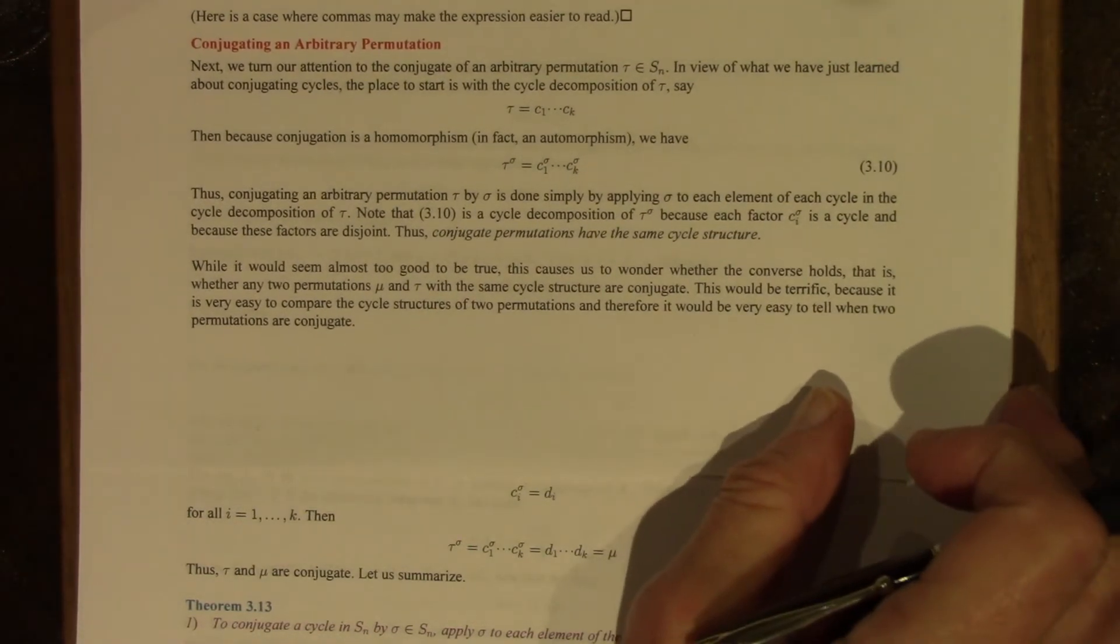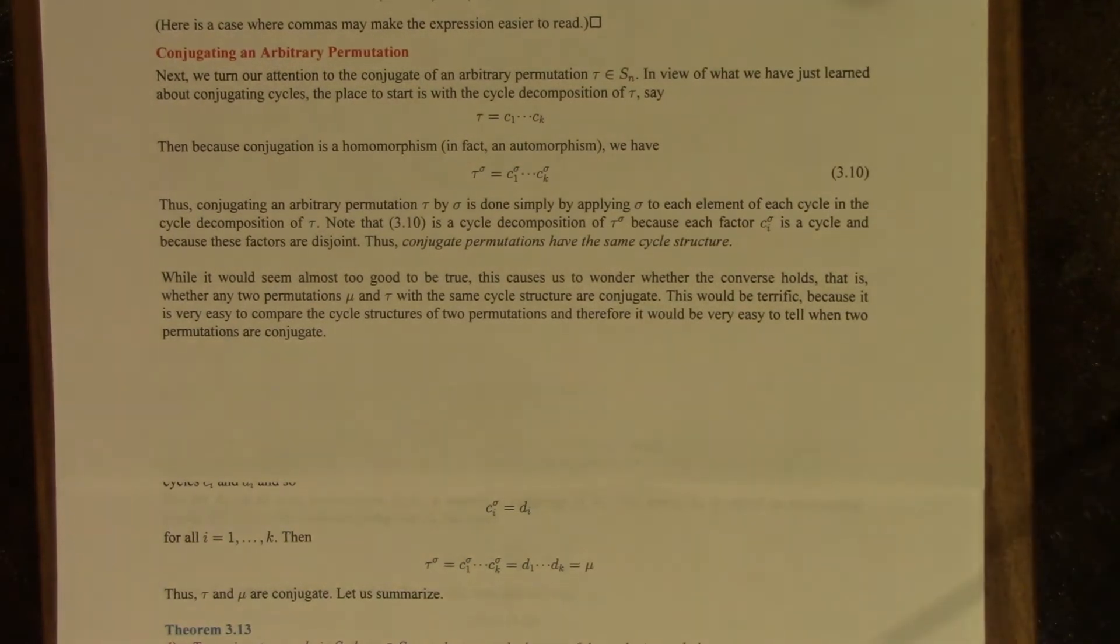Well, now if you were doing this, if you were the first one to discover all this, you would now be saying, wow, it would seem almost too good to be true, but maybe the converse is true. Maybe if two permutations have the same cycle structure, they have to be conjugate. That would be terrific. Because then it would be easy to tell when two permutations were conjugate. You just look at their cycle structures, see if they're the same or not.